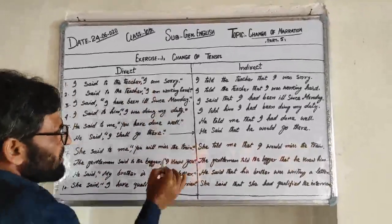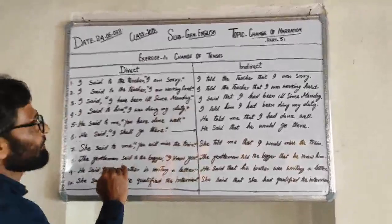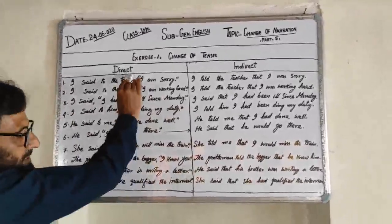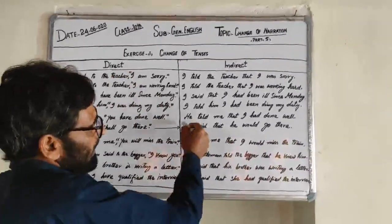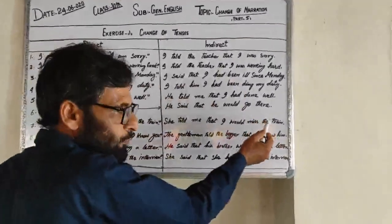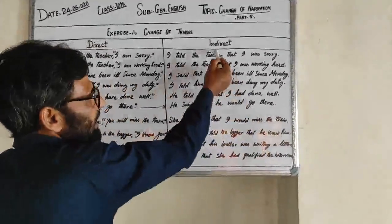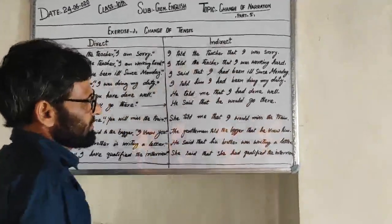یہ column جو ہے، left side والا، یہ ہے direct speech اور right side والا portion یا column جو ہے یہ ہے indirect speech۔